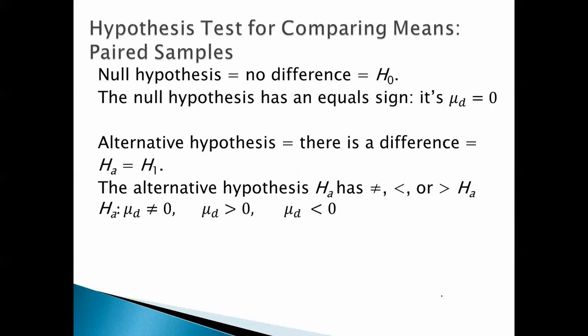Find the null and alternative hypotheses. The null hypothesis is that there is no difference, and it has an equal sign. It's mu sub d equals zero. In other words, the mean of the differences is zero. The alternative hypothesis is that it does make a difference. And in this case, the alternative hypothesis,